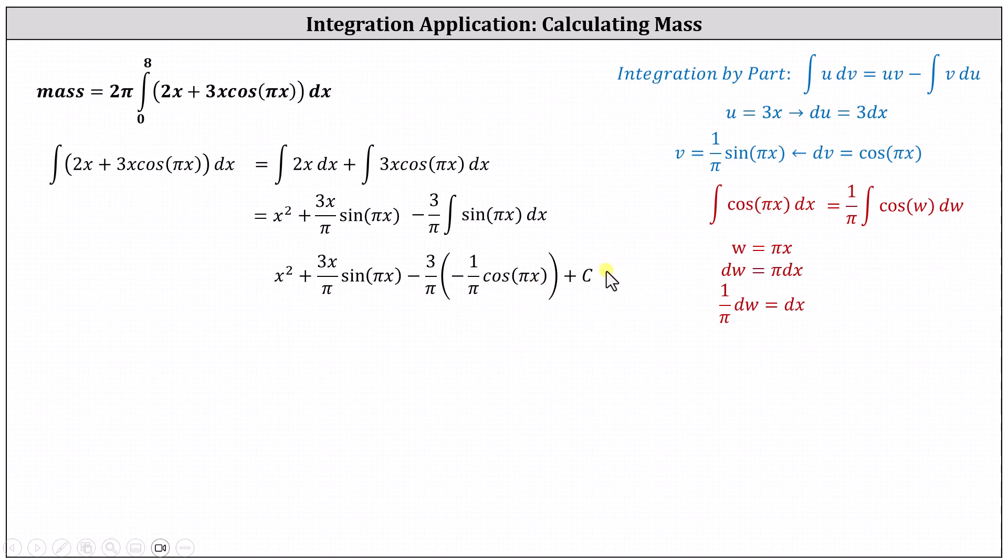and then of course plus C. Simplifying, the antiderivative is x² + (3x/π)sin(πx) + (3/π²)cos(πx) + C.